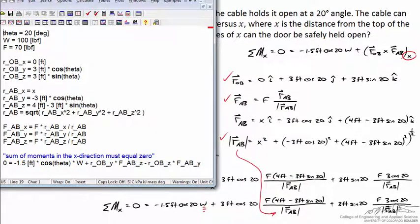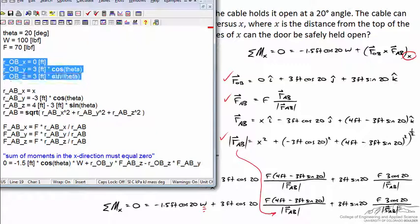To solve the problem, let's use a program like engineering equation solver. And I've keyed in values for theta, the weight of the door, and the maximum force that that rope can withstand. I've also included the x, the y, and the z components for ROB.